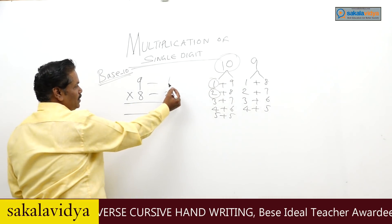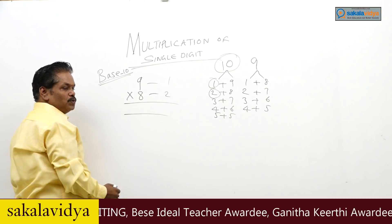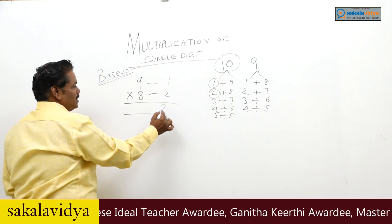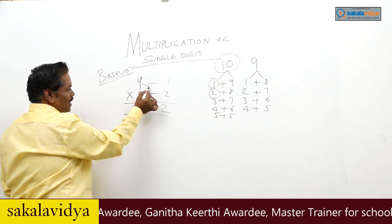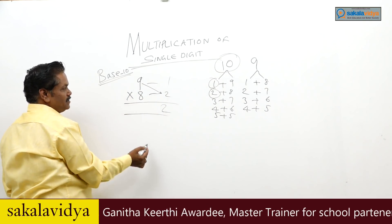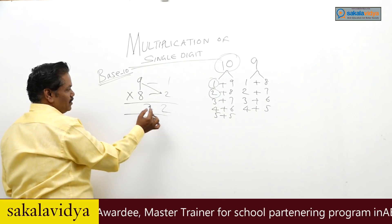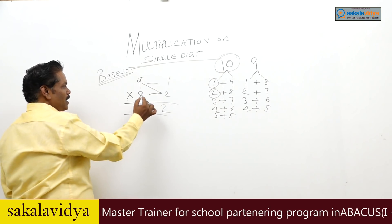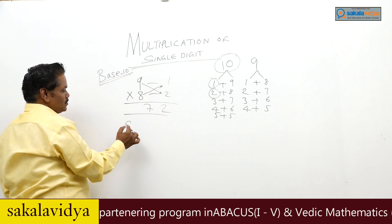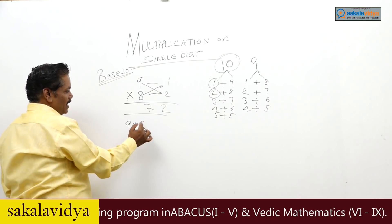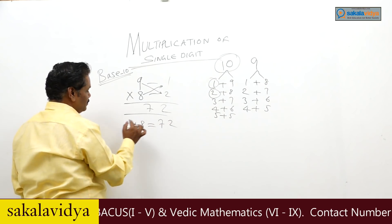Now what we will do is multiply the units place: 1 into 2 is 2. And from 9 we subtract: 9 minus 2 is 7, or 8 minus 1 is 7. So therefore, 9 into 8 is 72.